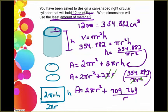So at this point you should have that your surface area formula is 2 pi r squared plus 709.764 over r.